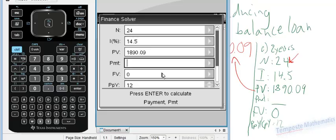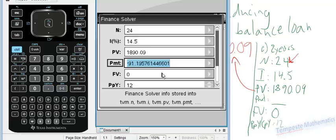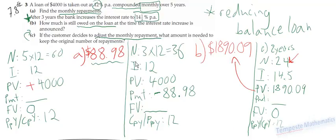So our payment over the next 24 months will have to be $91.20, approximately. So again, rounding to the nearest cent, the answer for Part C is 91.20.